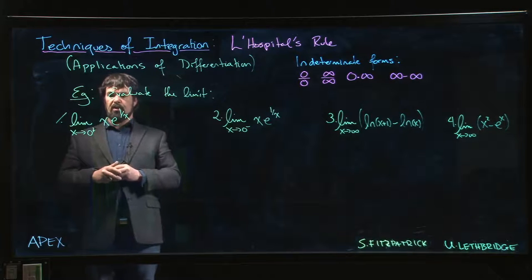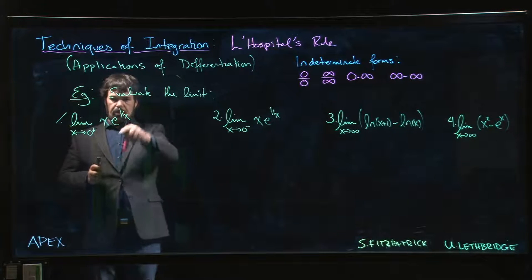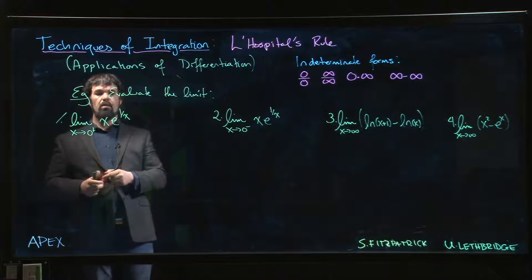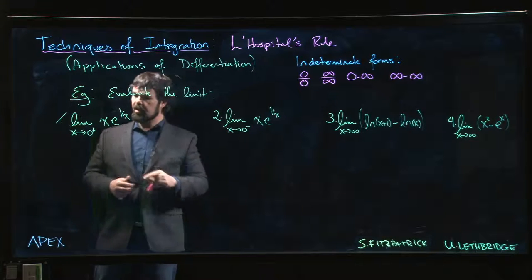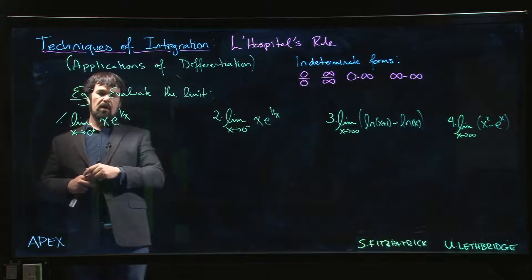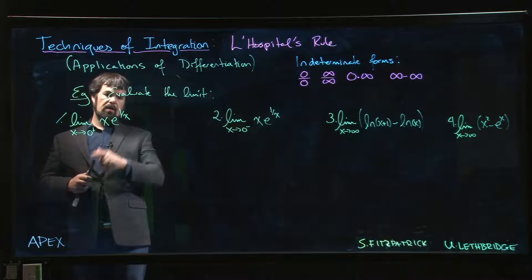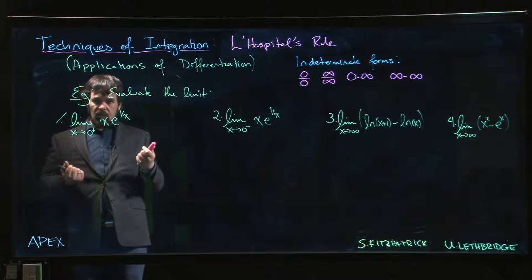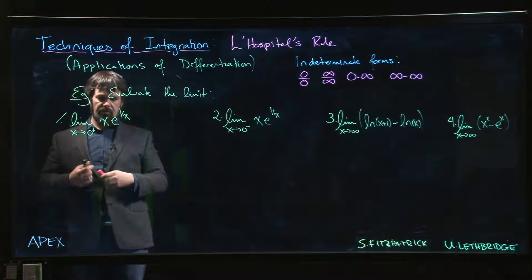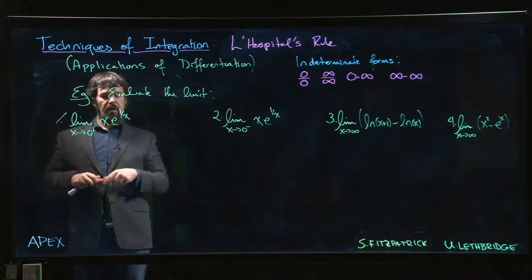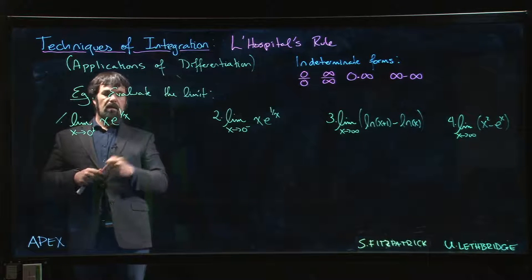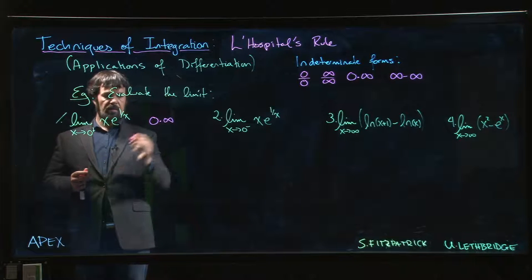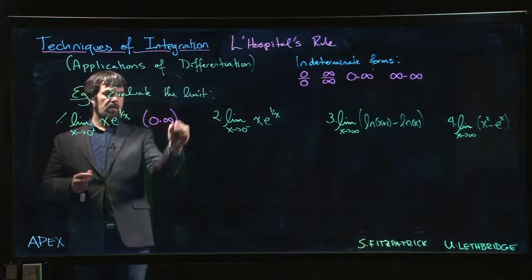So let's see what we can do with these. This particular limit, as x approaches 0 from the right, x is going to 0. And 1 over x is going to infinity, so e to the 1 over x is going to infinity. So this is a 0 times infinity limit.